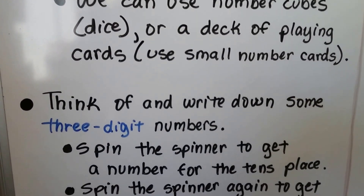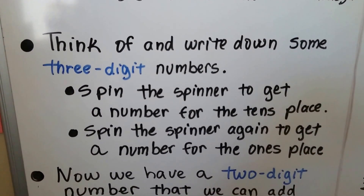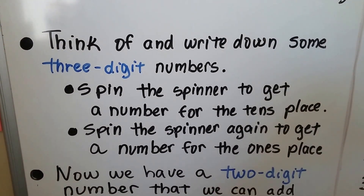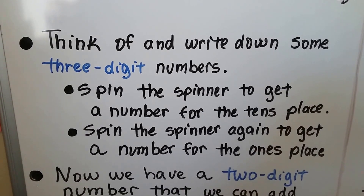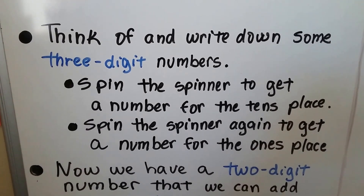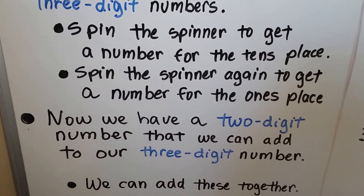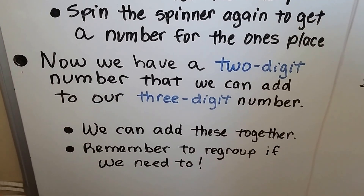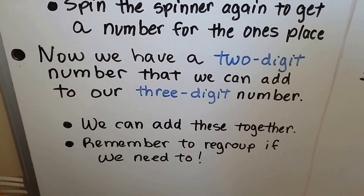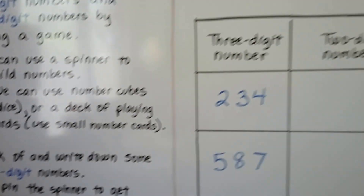We can think of and write down some three-digit numbers, and then we can spin the spinner to get a number for the tens place and spin it again to get a number for the ones place to make our two-digit number. Now we have a two-digit number that we can add to our three-digit number. We can add these together but remember to regroup if we need to. So here we're going to show you how to play the game.